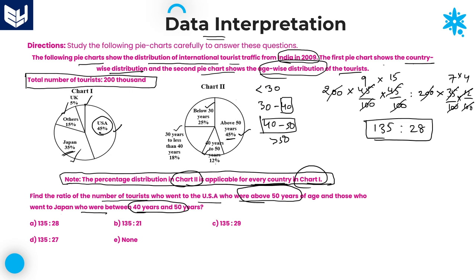Therefore, the required ratio is 135 is to 28. Check the option — option A, 135 is to 28. That is the required answer. Option A is the right answer.